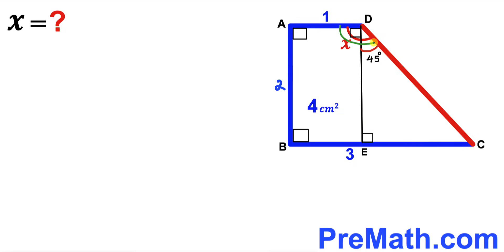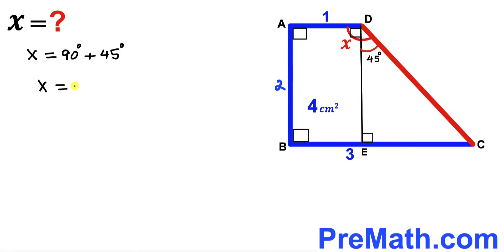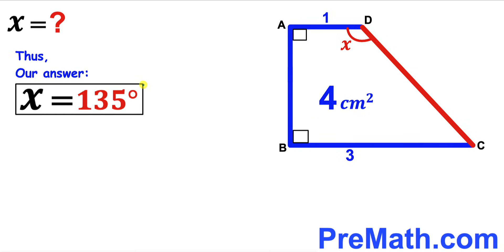For the final step: angle ADC is x, and it is the sum of two individual angles — the 90 degree angle and the 45 degree angle. Therefore, angle x equals 90 degrees plus 45 degrees, giving us x equals 135 degrees. After all calculations, our angle x turns out to be 135 degrees, and that's our final answer.